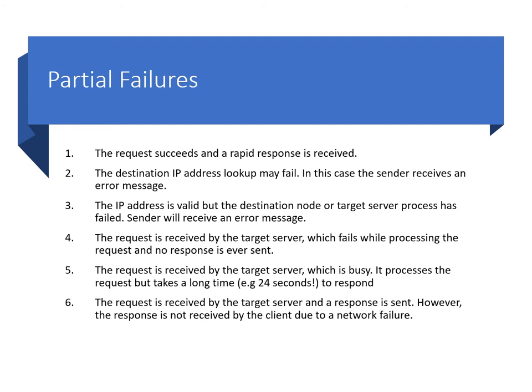Number four is where life gets trickier: the request is received by the target server, but while it's processing the request it fails — the software crashes and no response is ever sent, so the client will never get a response. Number five: the request is received by the target server, but the server is really busy and processes the request slowly — taking multiple seconds instead of the expected 100 milliseconds. Number six: the request is received and the response is sent, but the response is not received by the client, perhaps dropped due to congestion by a router.